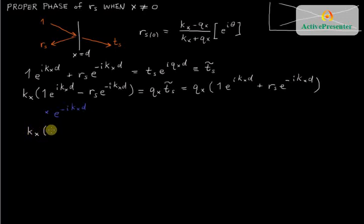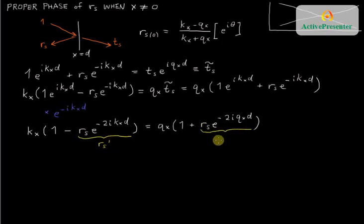So that these terms will become ones, and this term will become e to the minus 2i k x d. So let's just rewrite that equation again. And we will get the following. And if I now associate this expression here, which is the reflection coefficient at location d, we're just calling that rs in this problem, and then times this exponential here, let's just for the moment call that rs prime.